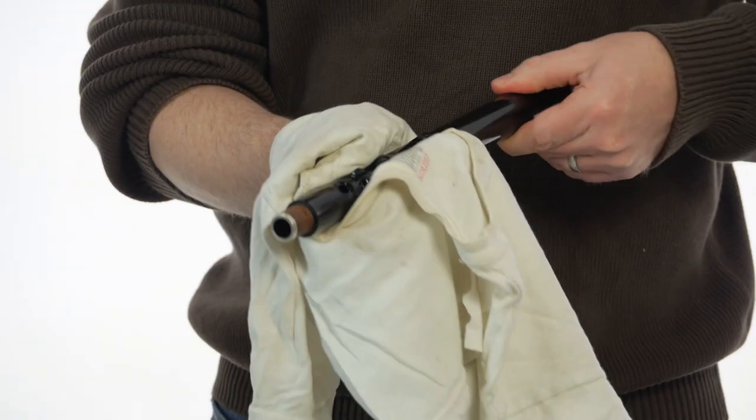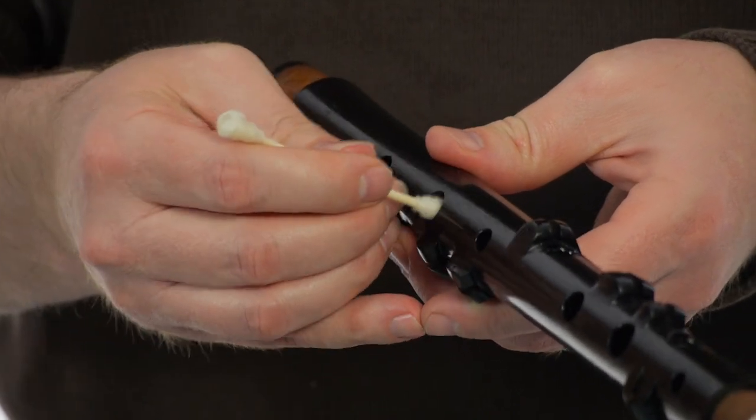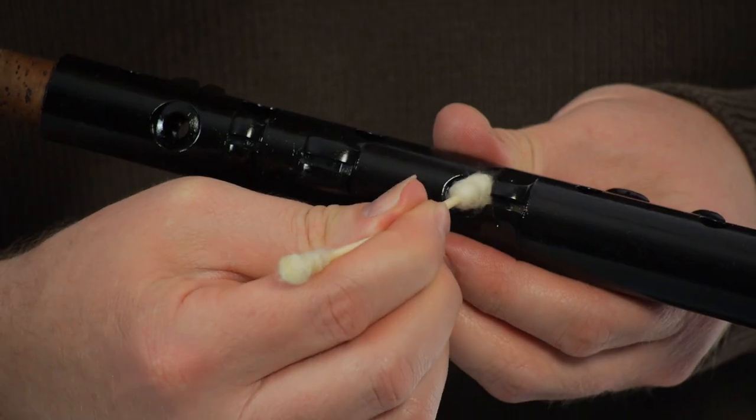For the exterior, I use an old cotton t-shirt. Using a clean cotton swab, remove the excess oil from the tone holes and embouchure.